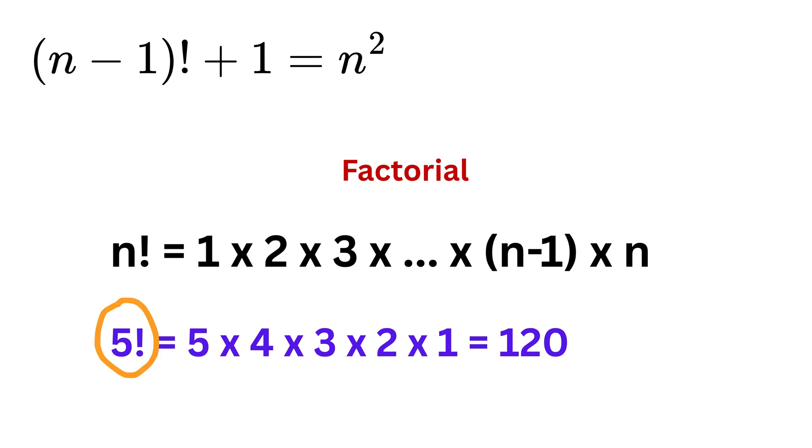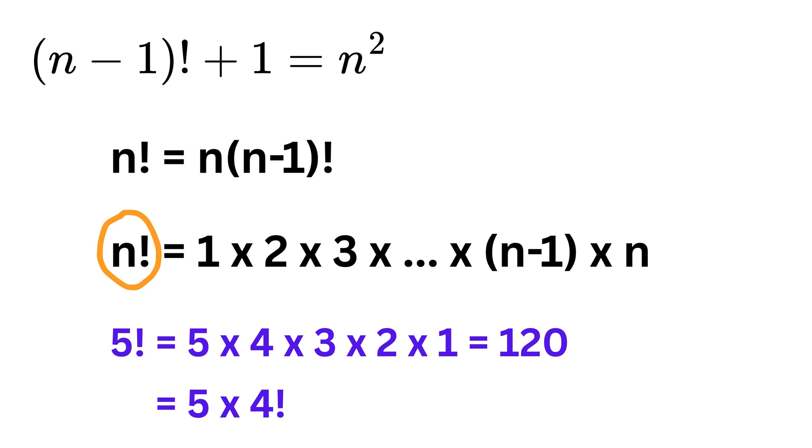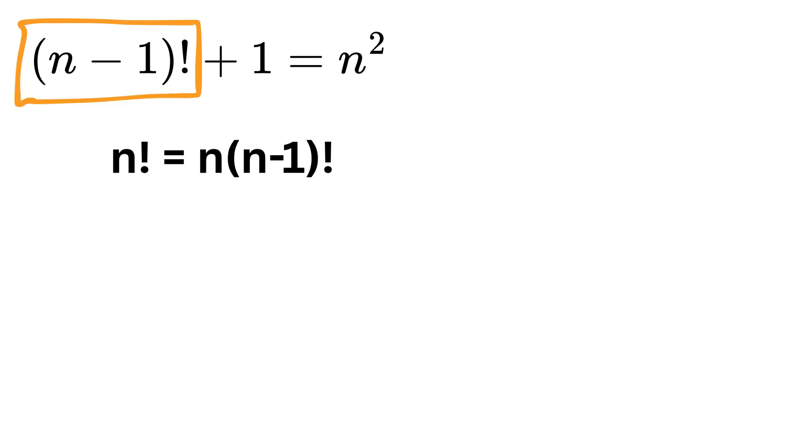Now here you can see that this 5 factorial can also be written as 5 times this entire thing, which is the same as 4 factorial. So any n factorial can also be written as n times n minus 1 factorial, and thus we can again rewrite this n minus 1 factorial as n minus 1 times n minus 2 factorial.